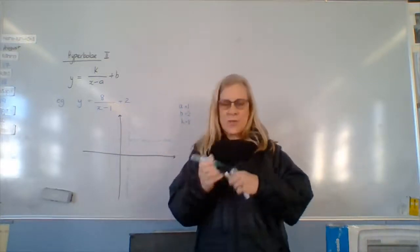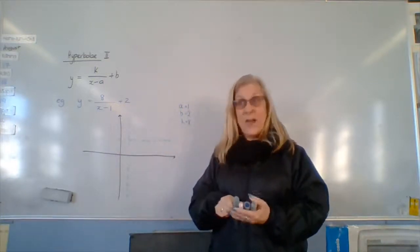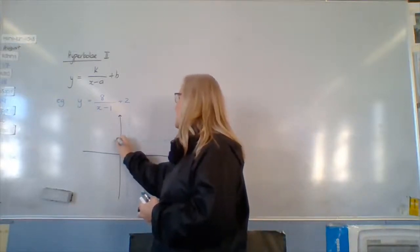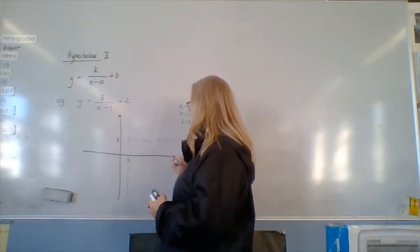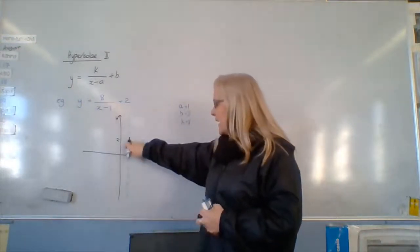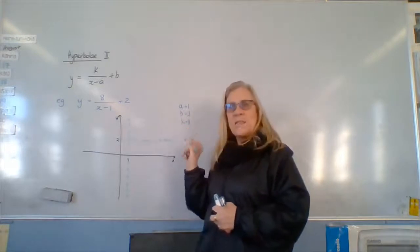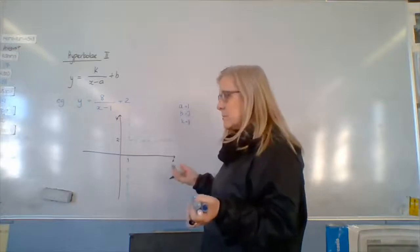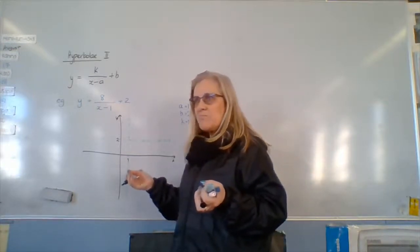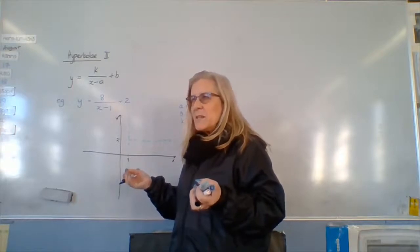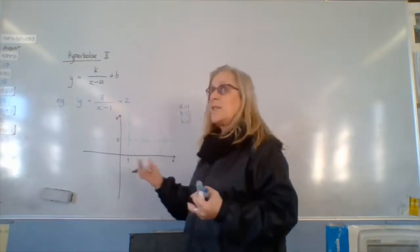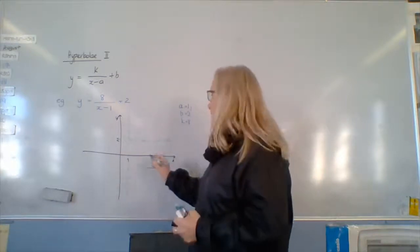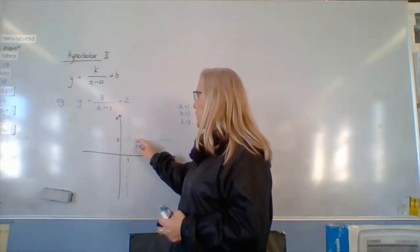So now we pretend that those green dotted lines are our axes. Even though they're not, we do pretend they are. So this is 1, this is 2. And we're going to draw from here everything that multiplies to give 8. So we've got 8 and 1, 2 and 4, and other things. So 1 and 8, 2 and 4 are enough anyway. So we've got 1 across, 2 across and up 4.